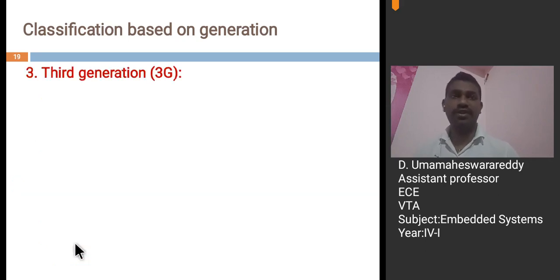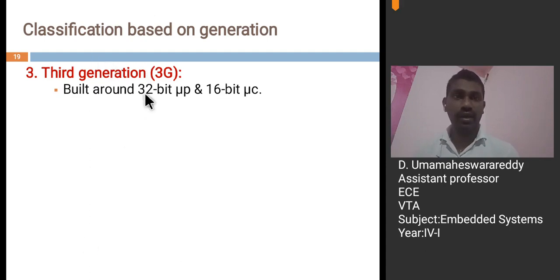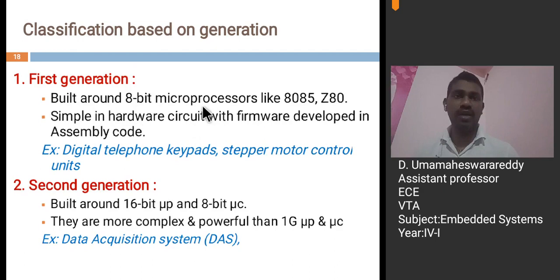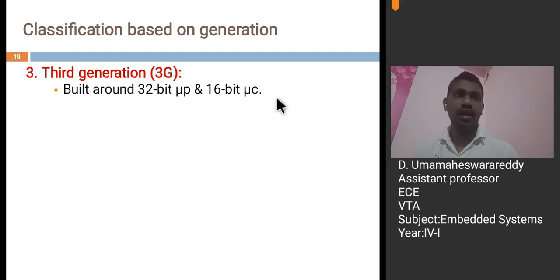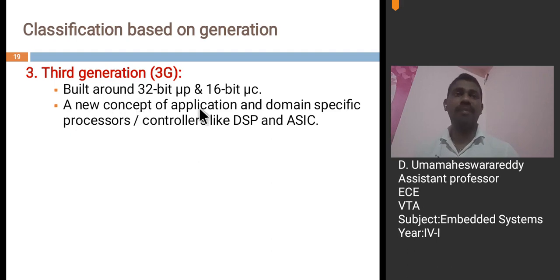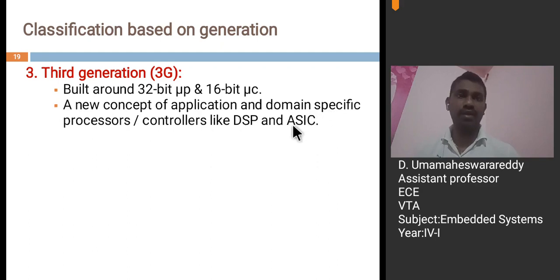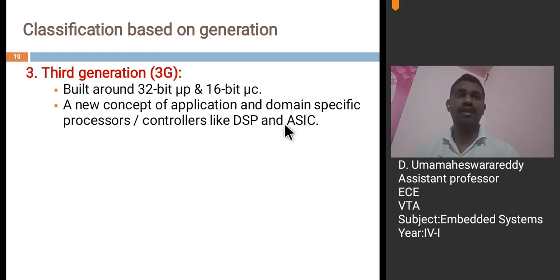Next, third generation. These are built around 32-bit microprocessors and 16-bit microcontrollers. The new concept of application and domain-specific processors and controllers like DSP and ASICs are introduced in this category. ASICs are built for specific application ICs — if you build the code once, it cannot be changed. For example, robotics, media, and industrial and process-controlled networking come under the third generation.